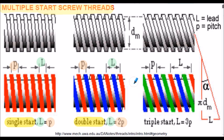So now one revolution of the double start thread moves a linear distance twice the pitch. For the triple start thread, the lead is three times the pitch. The diagram shows the red thread cut with three times the pitch of the standard single thread, and within it the blue and green threads are cut — three threads commencing 120 degrees apart on the thread form. So one revolution of the three-start thread moves a linear distance three times the pitch.